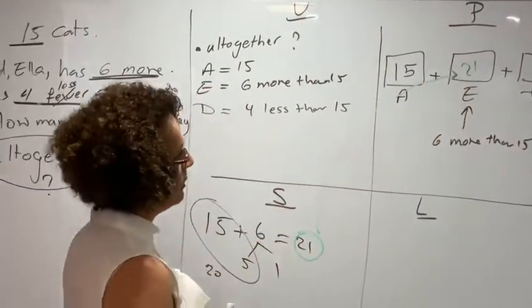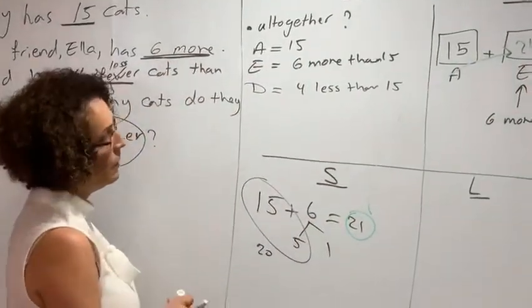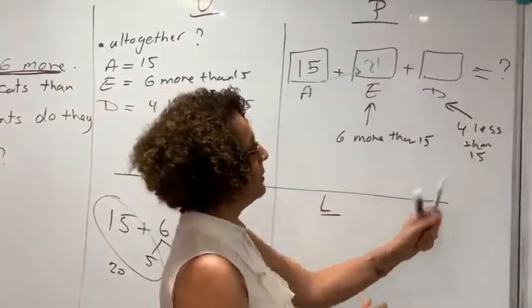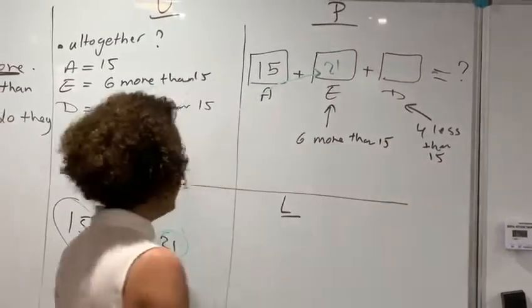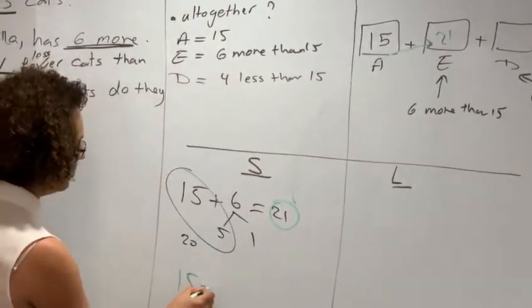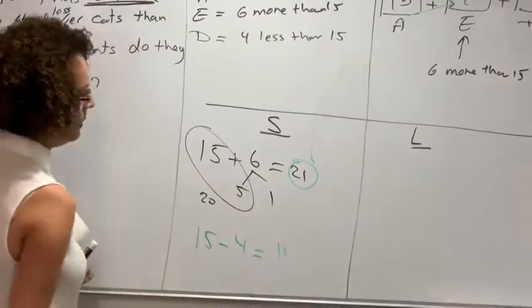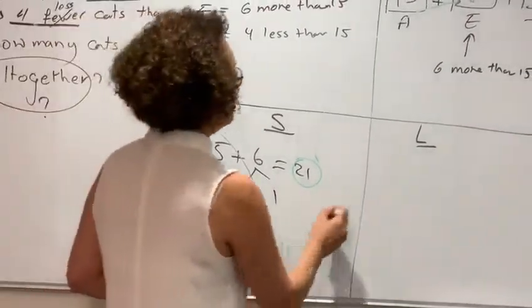Now that 21 comes here. Now we have a quantity that is known. And then the last one, which is 4 less than 15. So they need to work out 15 take away 4. That's an easy one to work out. That's 11.